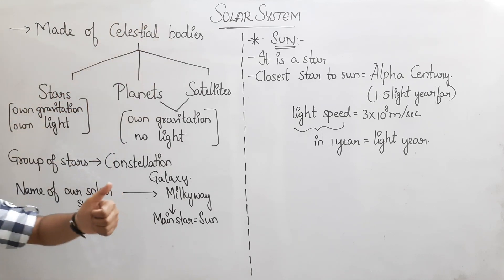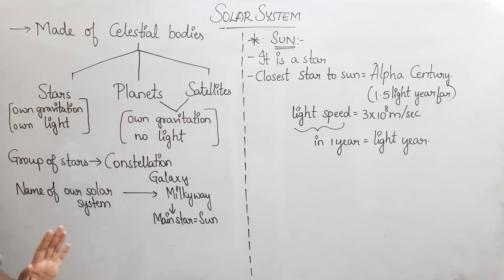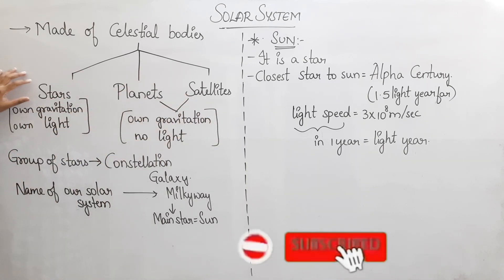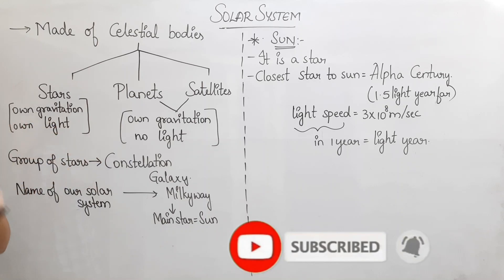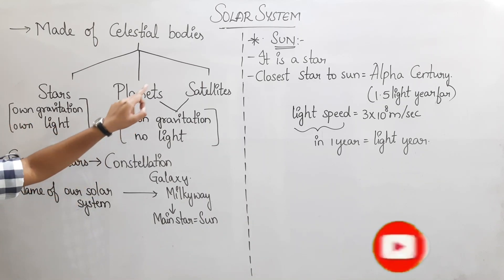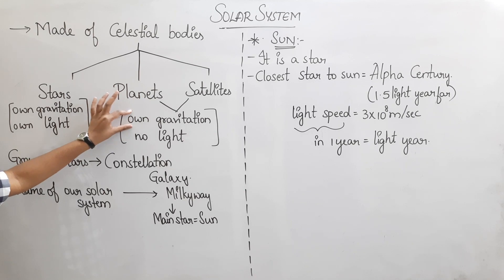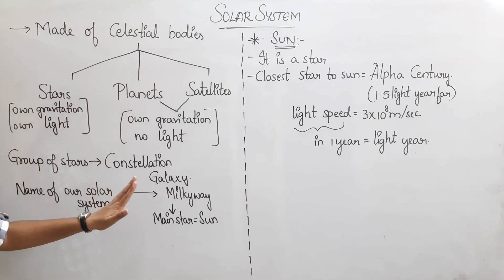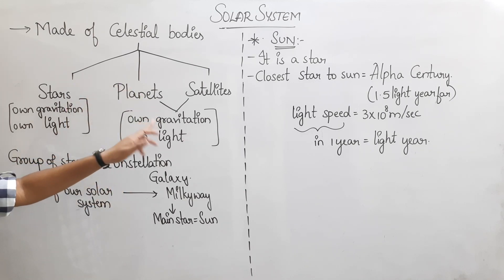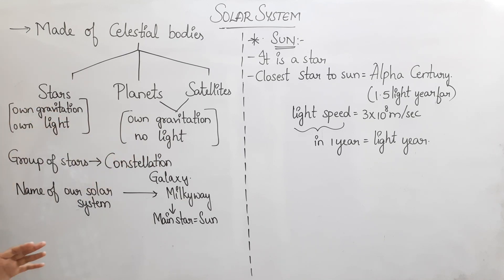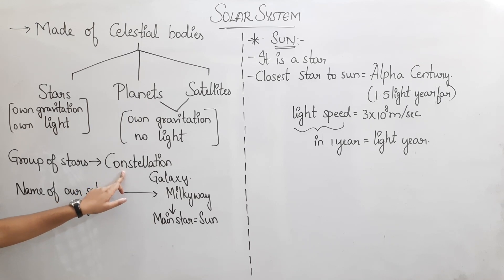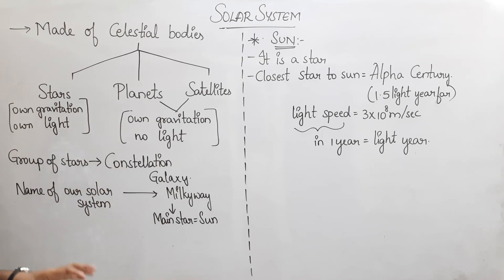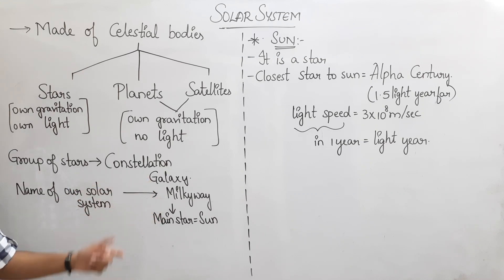Celestial bodies are stars, planets, and satellites. A group of stars is called a constellation. Our solar system is known as the Milky Way, and the main star of the Milky Way is the Sun.